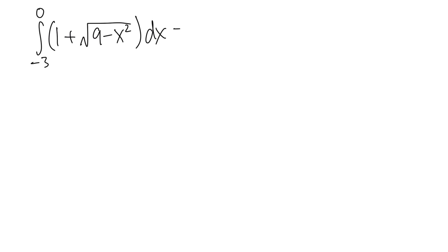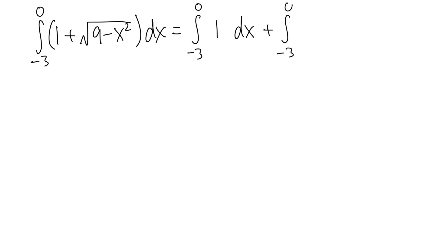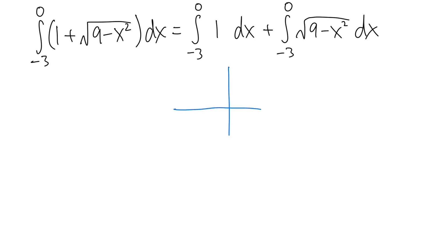For the next problem, I would like to break this down into two integrals. The first one is the integral from negative 3 to 0 of 1 dx. Next, we add the integral from negative 3 to 0 of the square root of (9 minus x squared) dx. We are going to grab each function separately and interpret the areas.